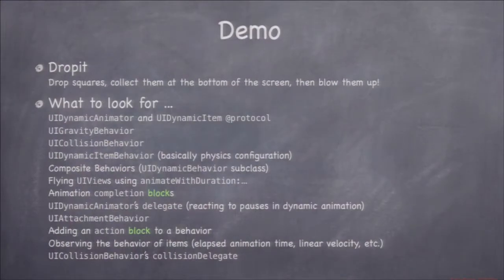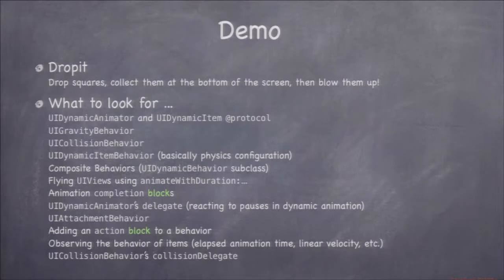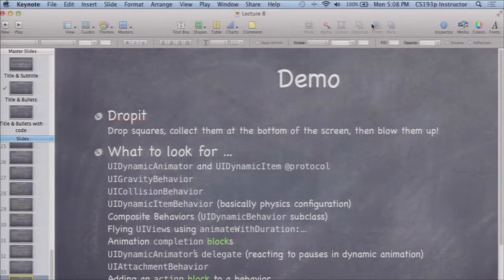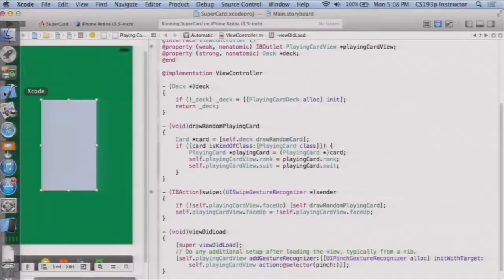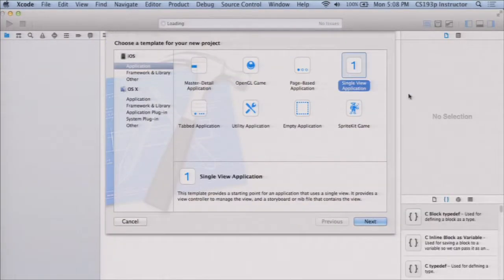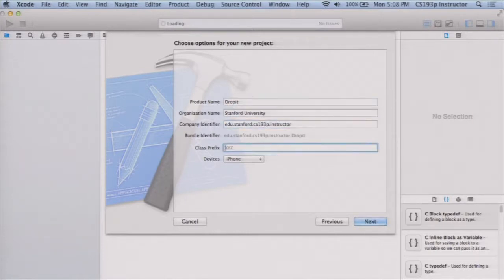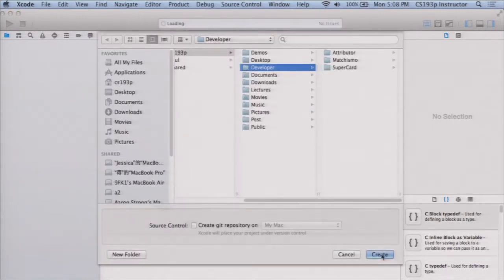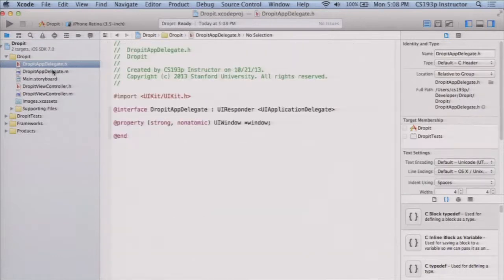Now let's do the demo, called Drop It. We're going to drop colored square views and have them collect at the bottom. When a full row collects, we blow them up — kind of like Tetris. We're creating a new project called Drop It, with a view controller also called DropIt. The goal is to show as much as possible about animation in the time available, then we'll finish the demo on Wednesday.